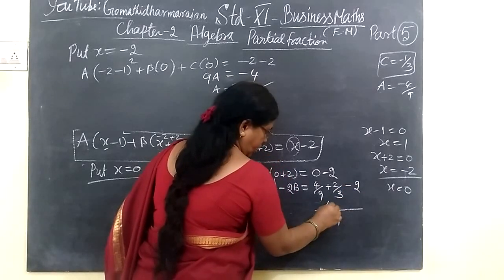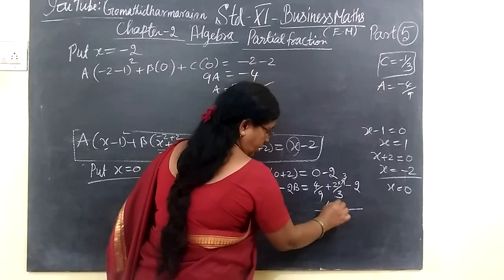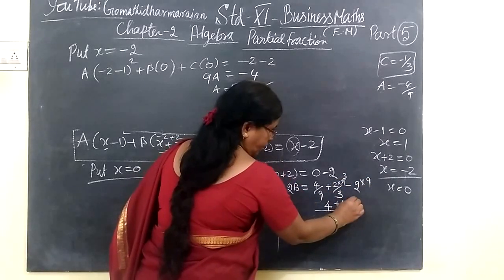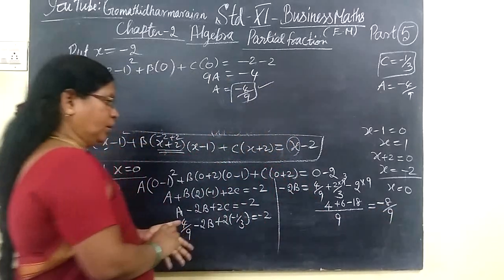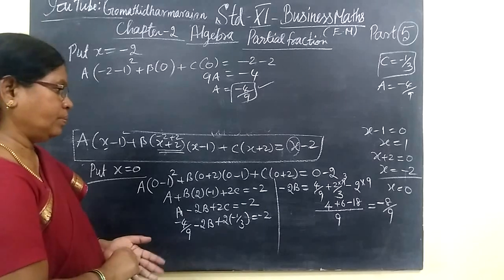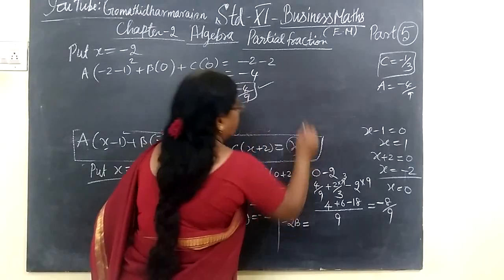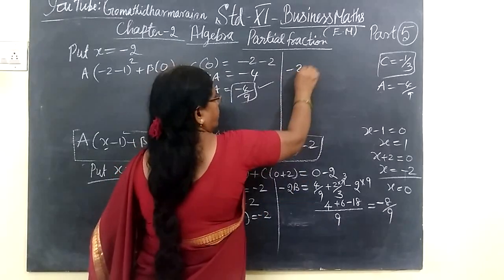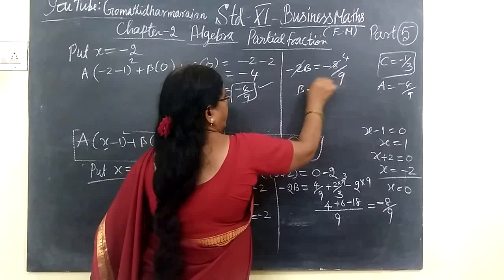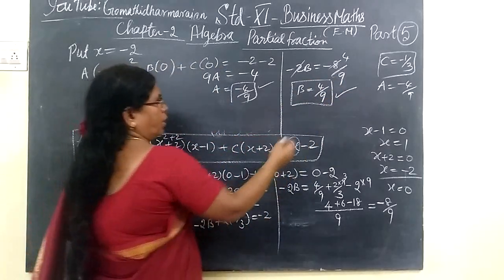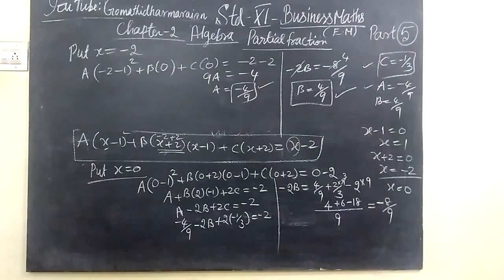The sum for this over 9. So we write 4, then multiply through. Minus 2B plus 2 by 3 minus plus 2 by 3 equal to minus 2. So minus 2B equals minus 8 by 9. Minus minus cancels, giving 4 by 9. Which means B equal to 4 by 9. So A value is minus 4 by 9, C value is minus 1 by 3, and B equal to 4 by 9.